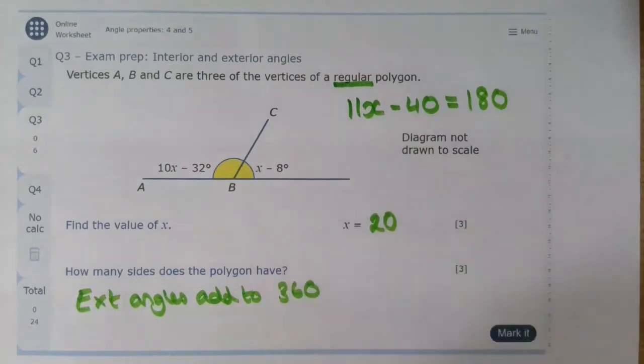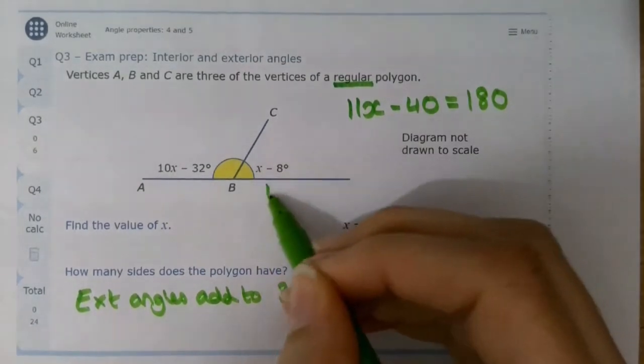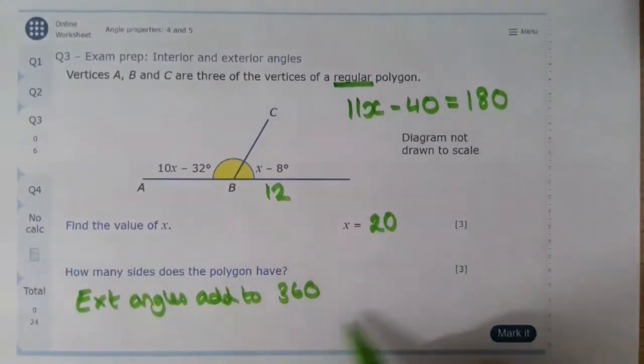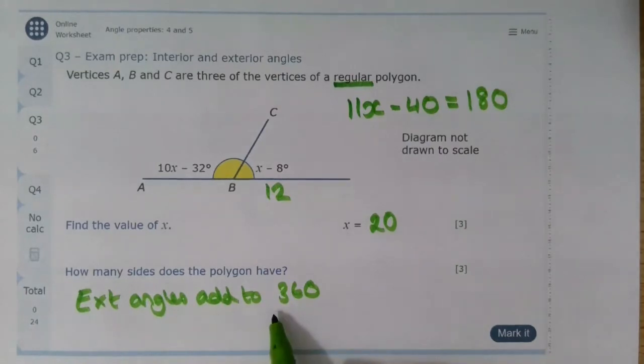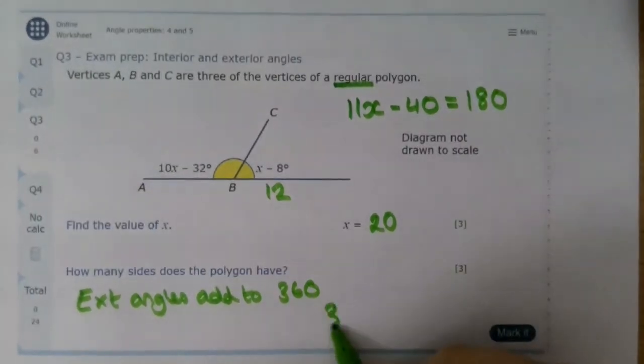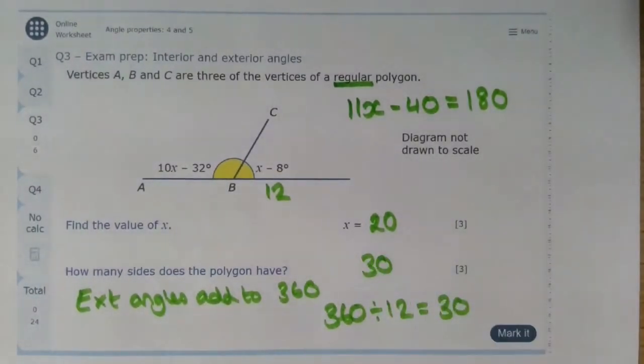So what is the exterior angle of this shape? Well, it's x take away 8, which is 12. So I know that each exterior angle is 12. How many exterior angles do I need to get 360? 30. So this polygon has 30 sides.